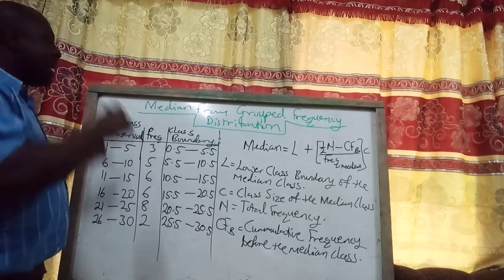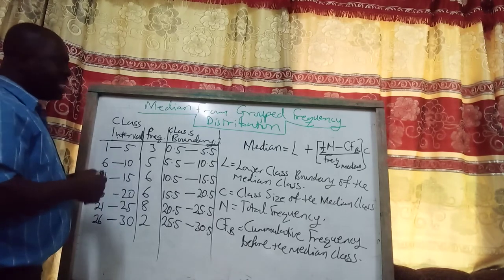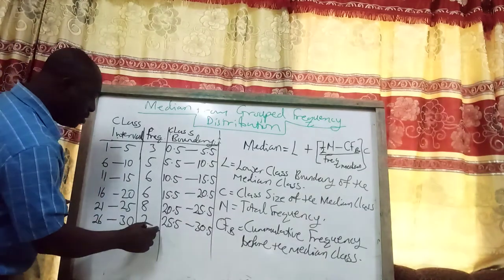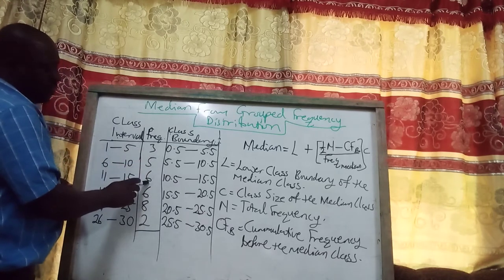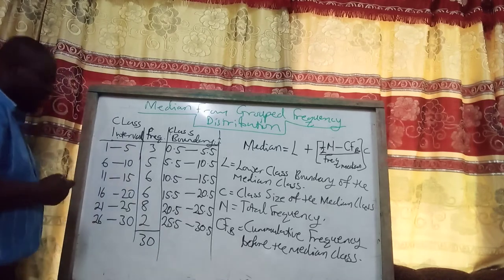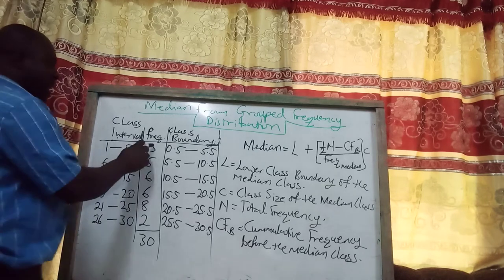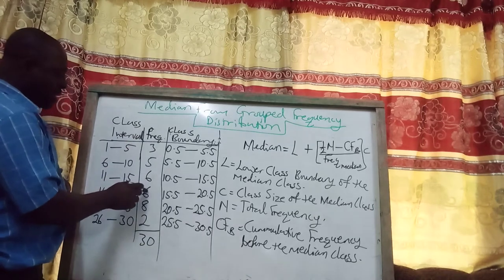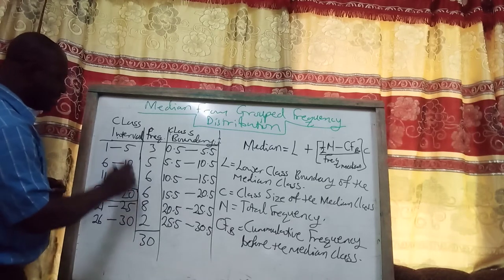Now, what is the median class? To find it, we sum all the frequencies and find halfway. When we sum the frequencies, we get cumulative totals of 8, 14, 20, and 30. Half of 30 is 15. Adding up the first two classes gives us 8 and 14 — we need one more to reach 15. So that one more is taken from the class 16 to 20, making the median class 16 to 20.